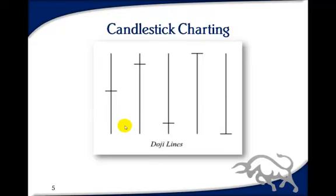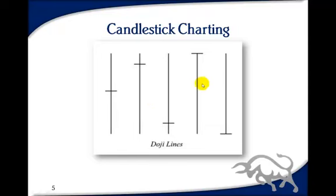Dojis are especially significant in candlestick charting because they represent indecision — neither buyers nor sellers won control of the market for that day, so they are often the first indication of a reversal. The long-legged doji has long wicks up and down, indicating a lot of fighting between buyers and sellers with no winner. The dragonfly doji has the body at the top and tends to be a bullish signal — more likely to indicate a reversal from a downtrend to an uptrend.